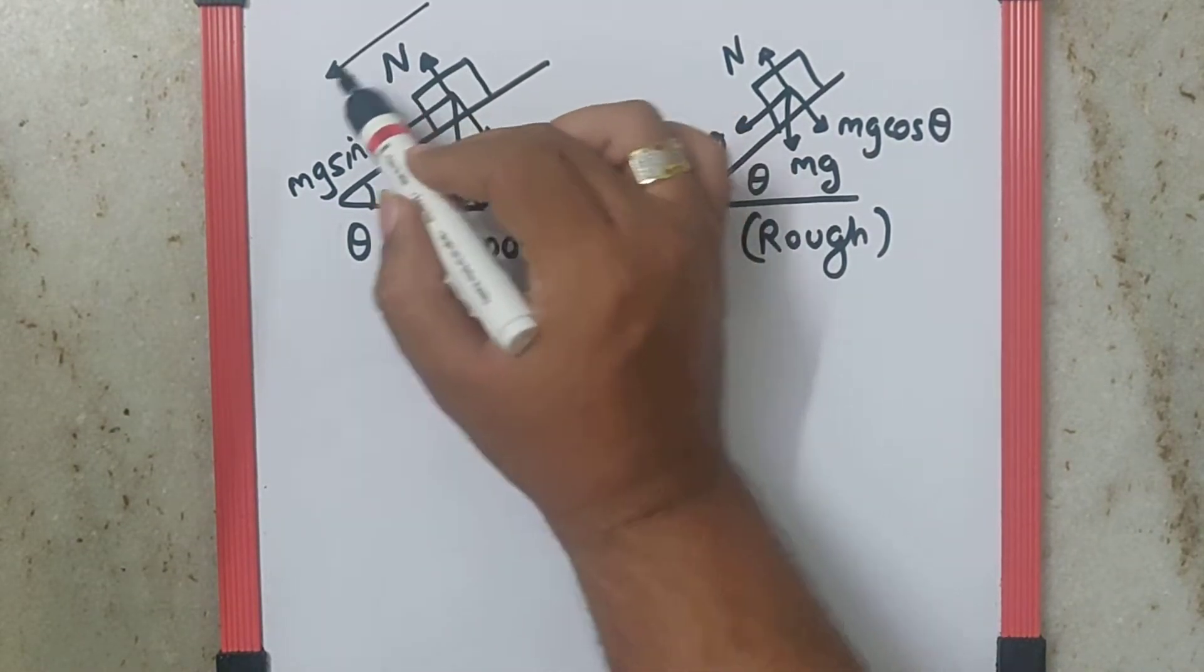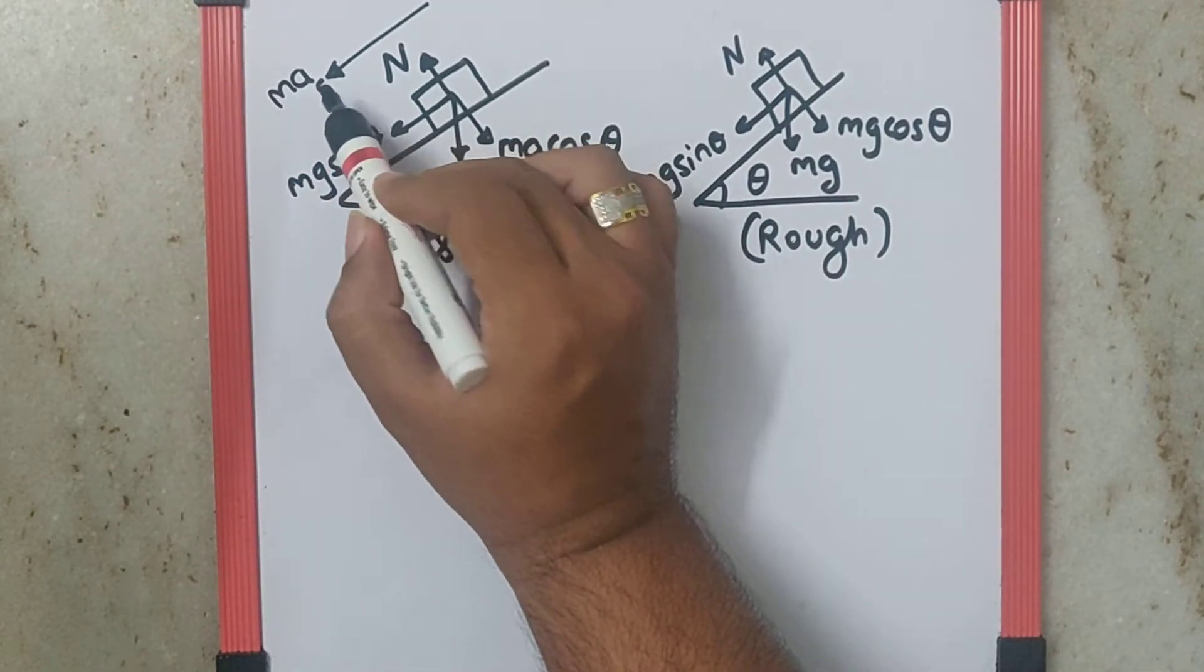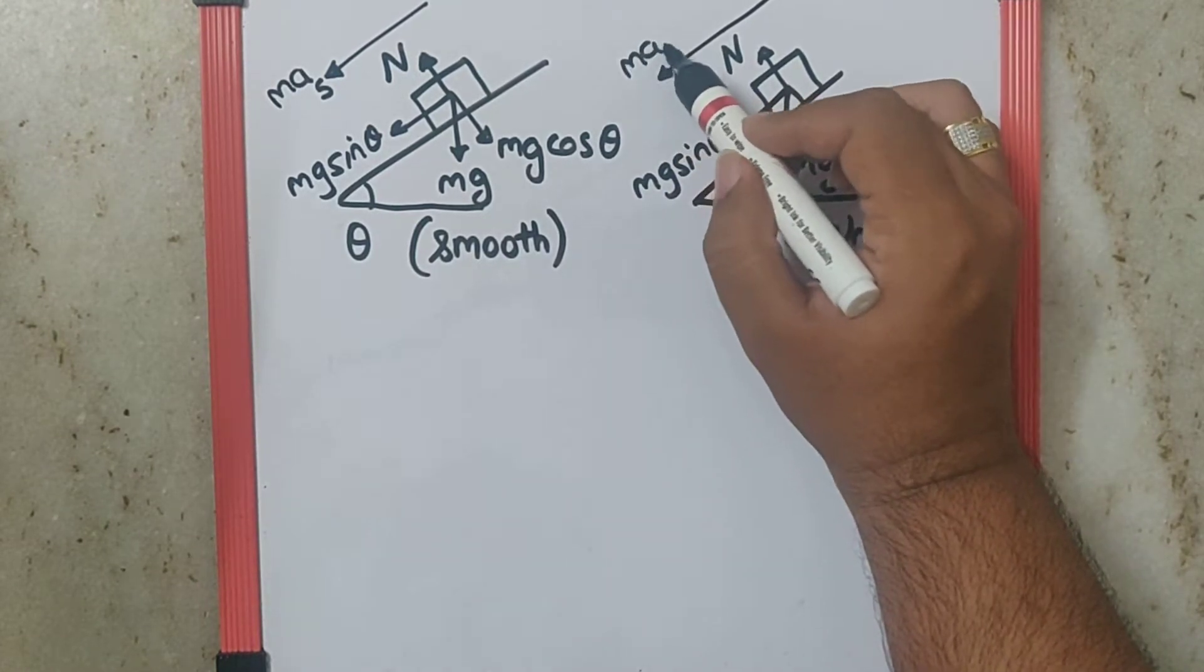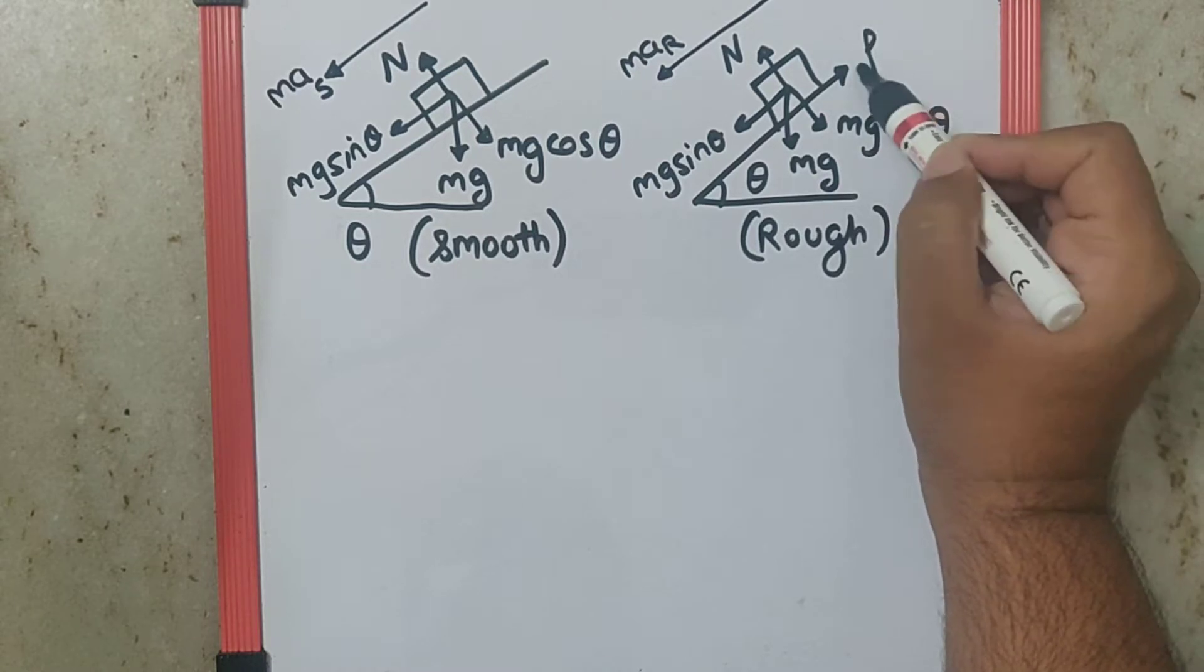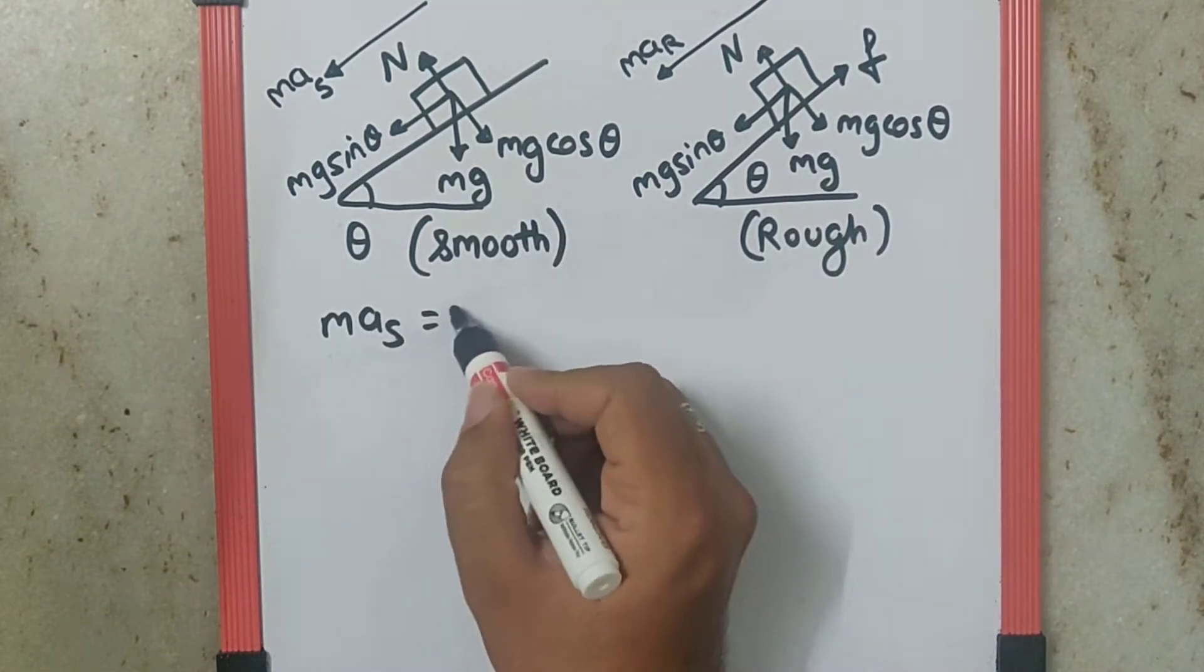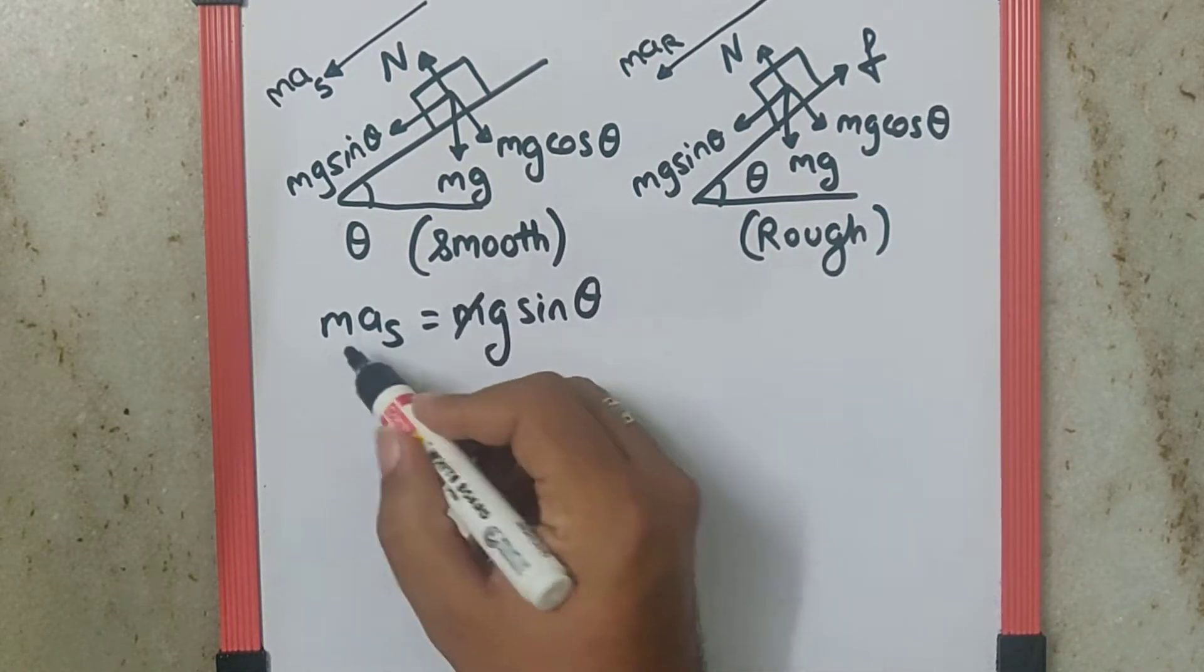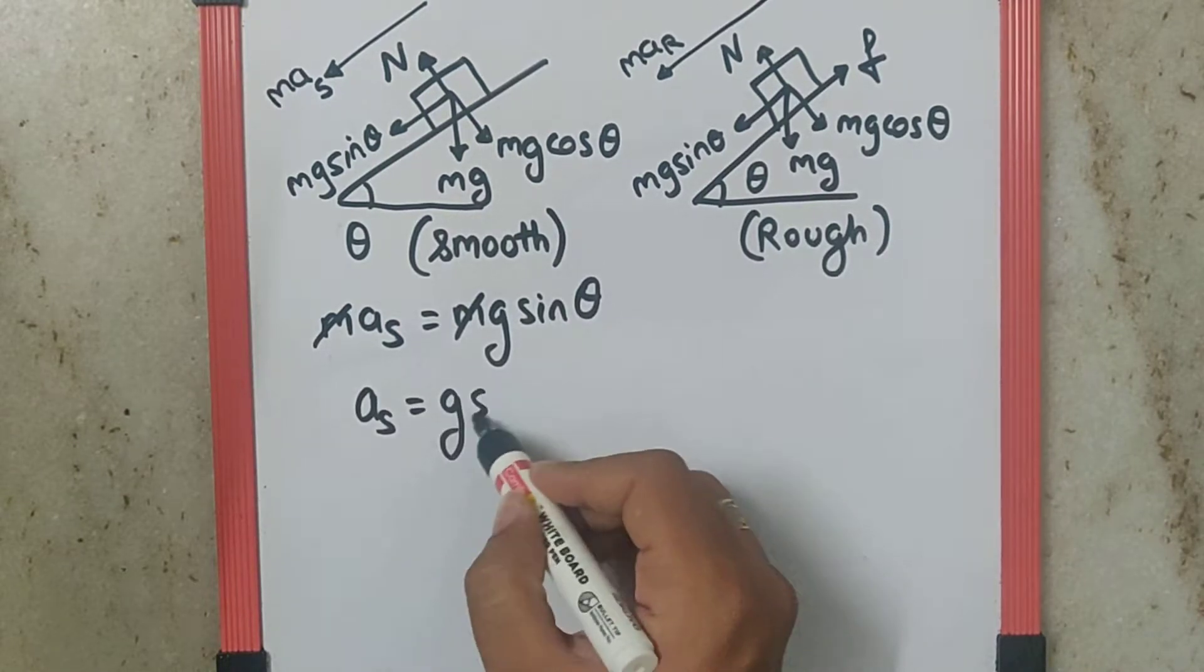So the motion which we can write as ma_s, the s stands for smooth. Over here there will be ma_r, the r stands for rough, and there has to be a friction acting over here. Now that is the major difference between the two. So here I can say ma_s is mg sin theta. If we cancel m, we get the smooth surface acceleration as g sin theta.